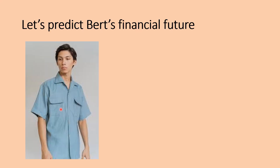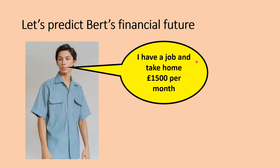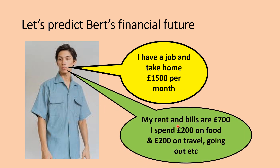I've got Bert here and we're going to predict his financial future. First of all we look at how much money he has. He's got a job and he takes home £1,500 a month. However, Bert has to pay rent and bills at £700, £200 on food and £200 on travel. So his income is £1,500 and his outflows are £700 plus £200 plus £200, so he spends £1,100. That means each month he has a spare £400 which he could save.